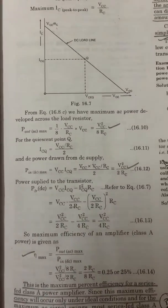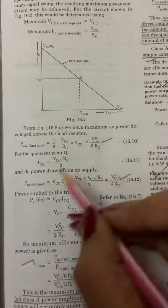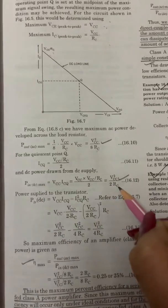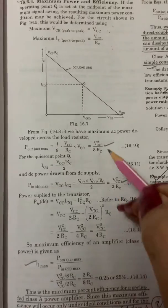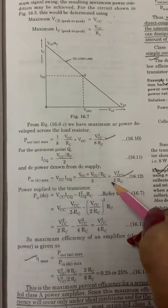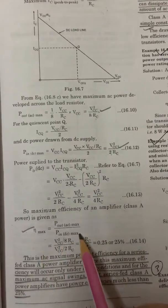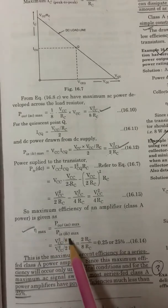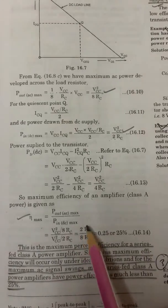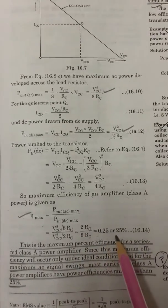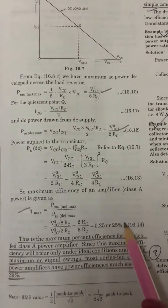The value of P_out(AC) maximum is VCC² / (8 × RC), and P_in(DC) maximum is VCC² / (2 × RC). The maximum efficiency of a Class A power amplifier equals P_out(AC) / P_in(DC). Putting in the values, we get (VCC²/8RC) / (VCC²/2RC) = 2RC / 8RC, which is approximately equal to 25%.